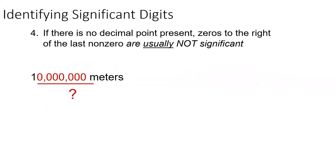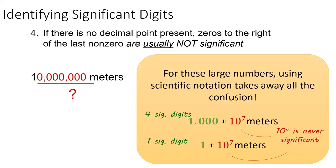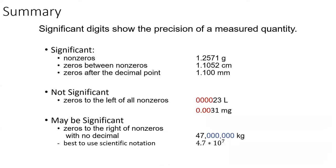If there is no decimal, zeros to the right of the last non-zero are usually not significant, but unfortunately in this case, it's a bit ambiguous. This is why I recommend writing large numbers using scientific notation. With scientific notation, it's totally easy to count the number of sig figs because it's always the number of digits in the first number. This slide summarizes the previous rules on sig figs all in one place, which is pretty neato.